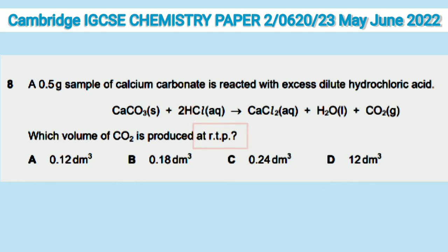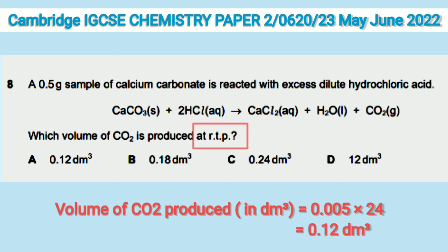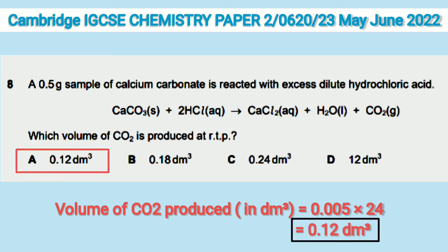So we have 0.005 × 24, which gives the answer 0.12 dm³. That means option A is the correct answer.